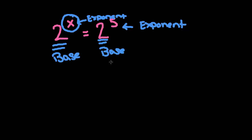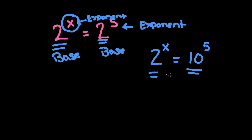That's not always possible. If I had 2 to the x equals 10 to the fifth, there's no way I can make the same base out of a 2 and a 10, so I would not be able to solve the problem using this approach. But when you have numbers that can be created out of the same base, that's a nice easy approach to use.